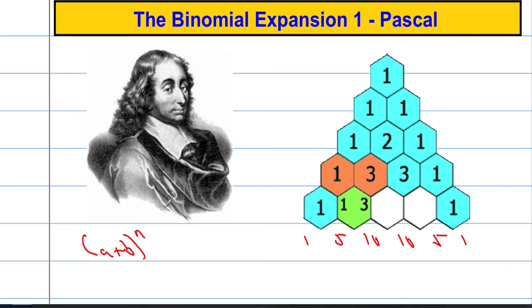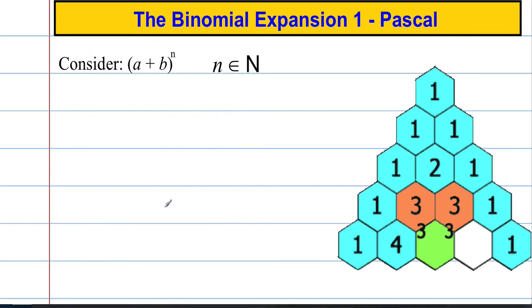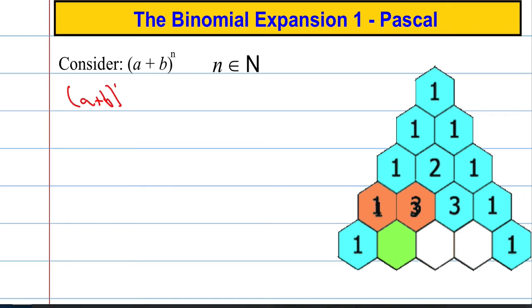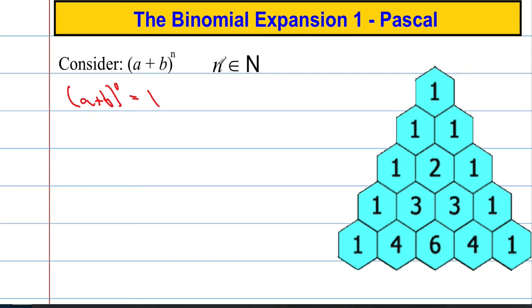So let's consider the general binomial a plus b to the power of n. First of all, let's work out what a plus b to the power of zero might be. Anything to the power of zero is going to be one. n is an element of the natural numbers, so it's a positive whole number.